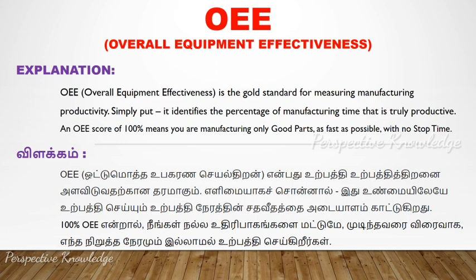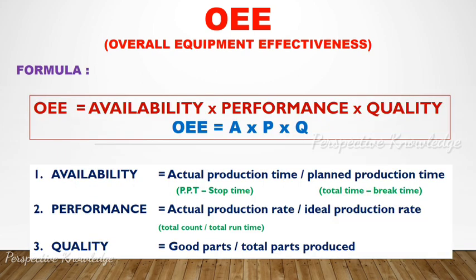So OEE is a formula: OEE equals Availability multiplied by Performance multiplied by Quality. Availability relates to machines in an industry — defects, problems, and break time affect how many units a machine can produce. Performance relates to manpower and process efficiency — if the manpower and process are efficient, the output is the performance.